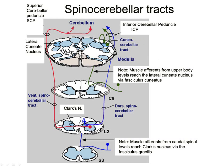The ventral spinal cerebellar tract does not originate from the periphery — information is not coming in on the medial division of the dorsal root like it is for the dorsal spinal cerebellar tract. Instead, millions of interneurons in the spinal cord gray matter send information into the cell bodies of the ventral spinal cerebellar tract. Second order fibers then cross by the central canal to the other side, pile up below the dorsal spinal cerebellar tract in the lateral funiculus, and continue up to the superior cerebellar peduncle.